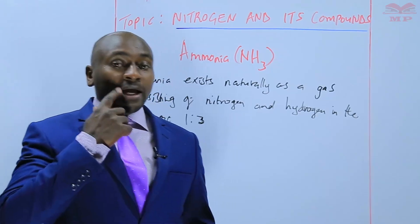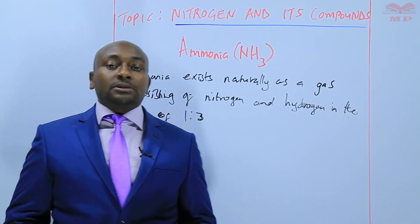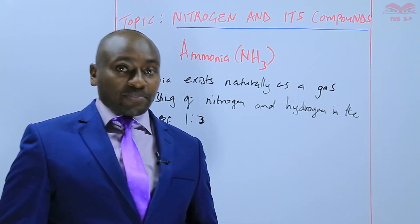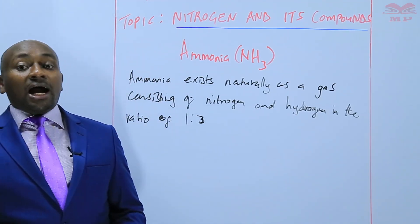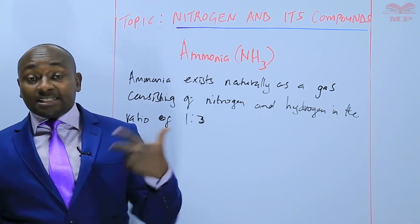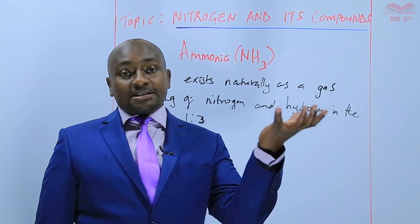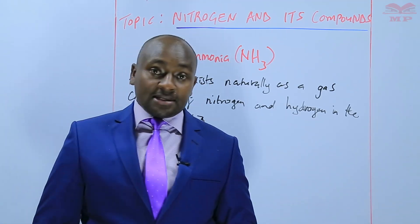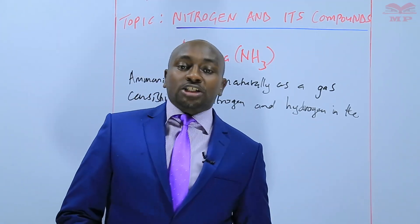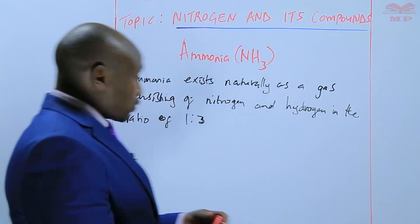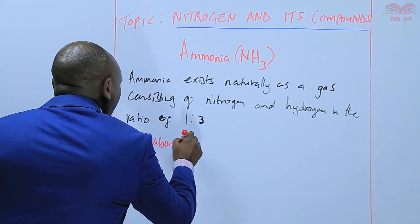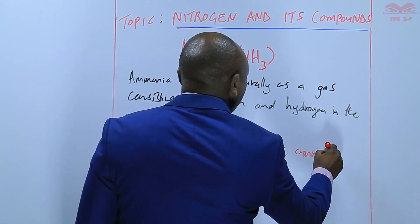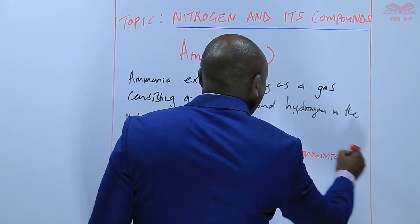Ammonia is prepared by a reaction between an ammonium salt and a strong base. It happens that ammonia, being a weak base, is more volatile — it vaporizes easily — and therefore it can be displaced by the less volatile bases such as sodium hydroxide, potassium hydroxide, calcium hydroxide, and so on.